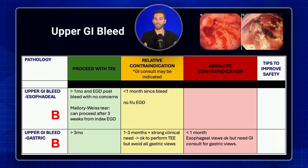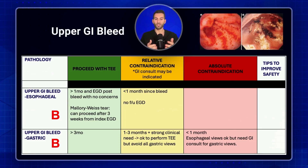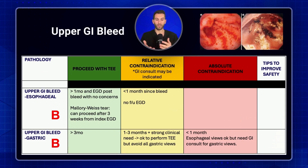Next, think about upper GI bleeding. Was it esophageal or gastric? Because the TEE probe could stay in the esophagus the whole time. Also, was it very recent? Was there a follow-up EGD? Or has it been stable and old for a long time? All those factors come into play when determining where to place the probe and where it would be safest.